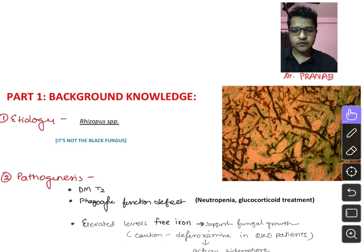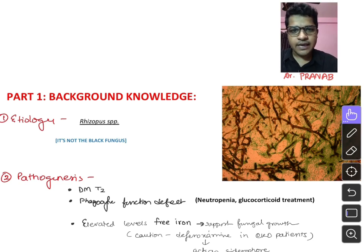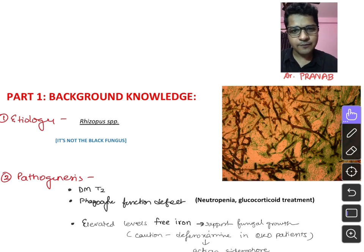Mucormycosis is a commensal pathogen in healthy people — it resides on our skin normally and does not cause any harm. However, in immunocompromised patients, their immunity is very low, which allows this commensal pathogen to enter the body and cause invasive systemic fungal disease.